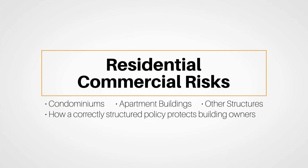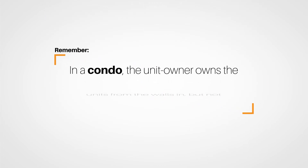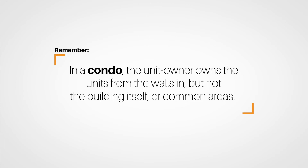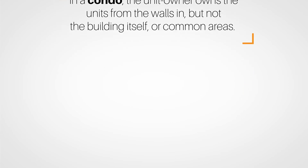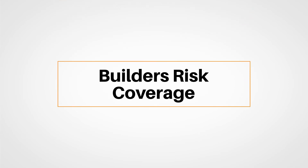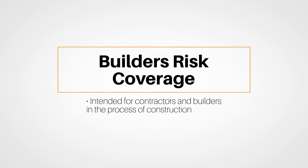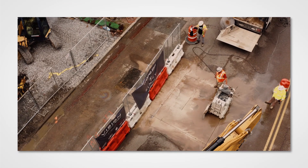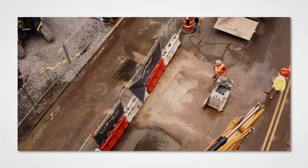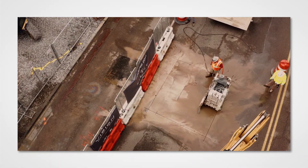We'll examine how a correctly structured policy can protect the building owner. Remember that in a condo, the unit owner owns the units from the walls in, but not the building itself nor common areas like a clubhouse or swimming pool. The lesson goes on to explore what's called builder's risk coverage, which is intended for contractors and builders in the process of construction who want to protect materials and equipment being used. You've seen construction sites before and probably noticed heavy pieces of equipment and building materials left on the job site overnight or on weekends — this is coverage for that type of risk.